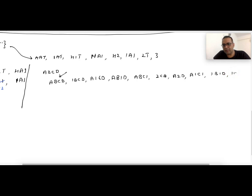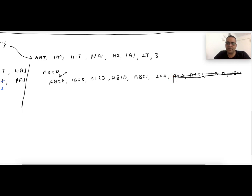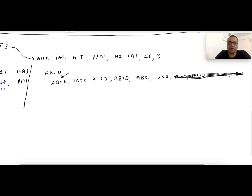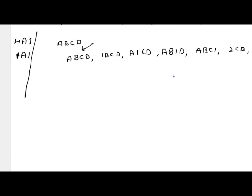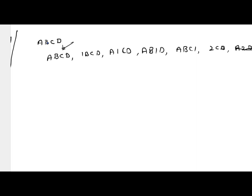There are multiple such possibilities and we want to write them in an organized way. During the interview, the first thing you should do is write them in a logical, organized way, because if we don't write them in a logical way then we will not be able to come up with the logic. So first we write the characters as-is, then replace the first character with a digit, then the second, then the third, then the fourth.